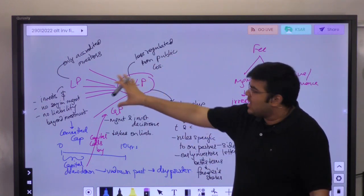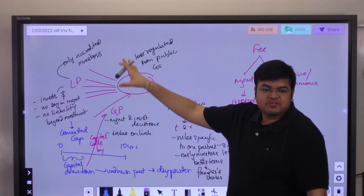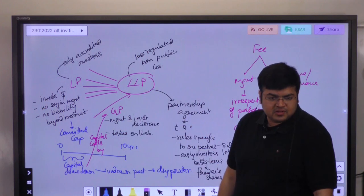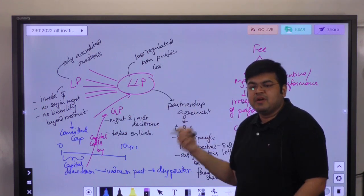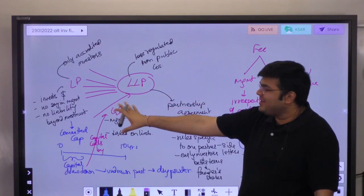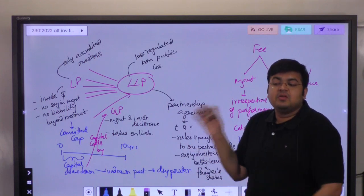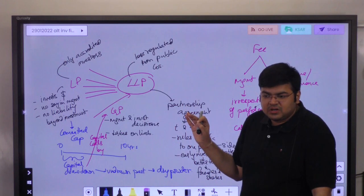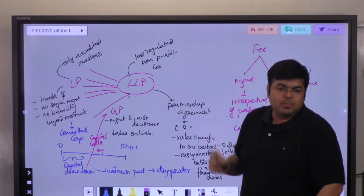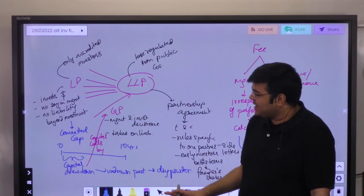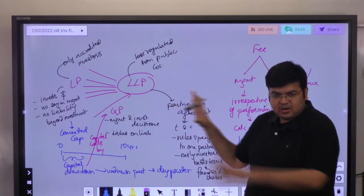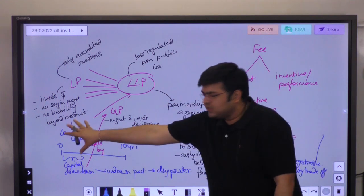The investors who invest only money are known as limited partners. They have to be accredited investors because they need to have huge amounts of money - we cannot allow the common public to invest into risky structures like PE funds and hedge funds. These limited partners invest money but have no say in management - they are not supposed to be running the fund or making investment decisions. Their liability is limited to their investment.